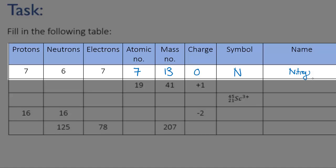The name is nitrogen. To complete the symbol, we put the atomic number at the bottom left and the mass number at the top left. Because this is a neutral atom, we don't need to write a charge. I'll leave the rest for you to finish off.